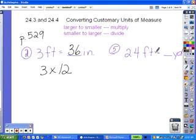For number 5, we're converting feet to yards. Yards is a larger unit of measure than feet, so we're converting from a smaller unit to a larger unit, which would mean we would have to divide. So we divide 24 by the number of feet in a yard, which is 3. 24 divided by 3 would give us 8.